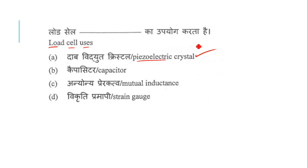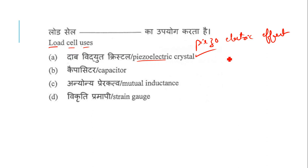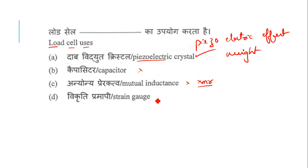Piezoelectric crystal means it works on the piezoelectric effect. It is used in a load cell in order to measure weight. A capacitor only charges and discharges — it cannot measure any kind of weight, so that is not the right answer. Mutual inductance is the principle of a transformer, nothing else.